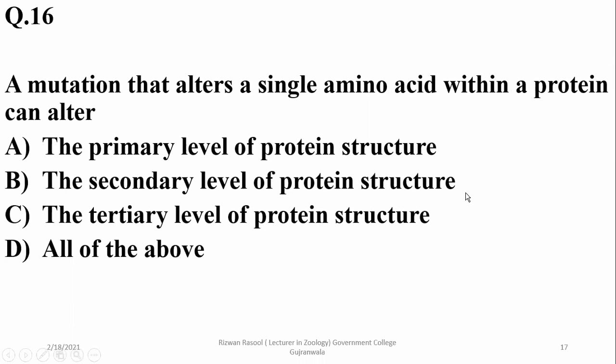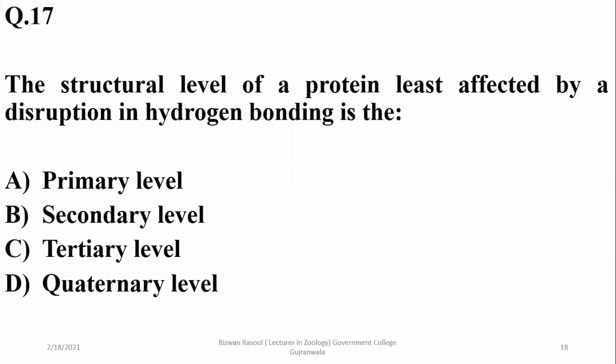A mutation that alters a single amino acid within a protein can alter the primary level of protein structure — yes. If there is a primary change, then secondary or tertiary change follows, so the right option is delta. The structural level of a protein least affected by disruption in hydrogen bonding is primary, because at the primary level you will not see hydrogen bonding — hydrogen bonding appears after that level.